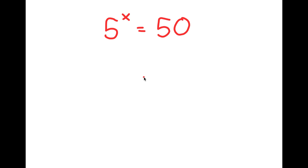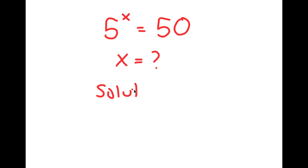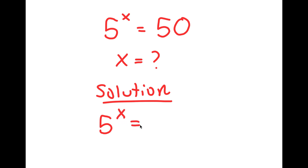All right, so in this problem I have 5 to the power of x is equal to 50. I obviously want to find the value of x here. In my solution, I'm going to first rewrite my equation. So 5 to the power of x is equal to 50.